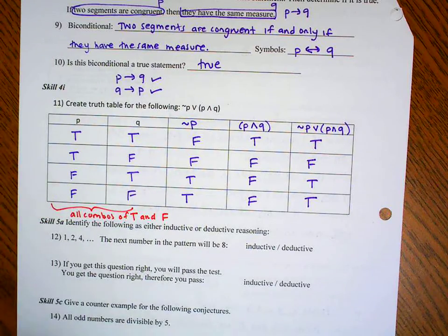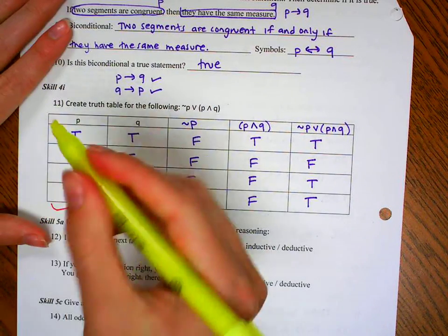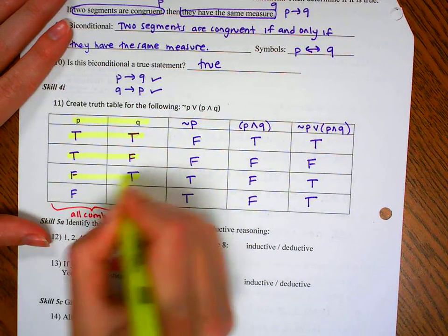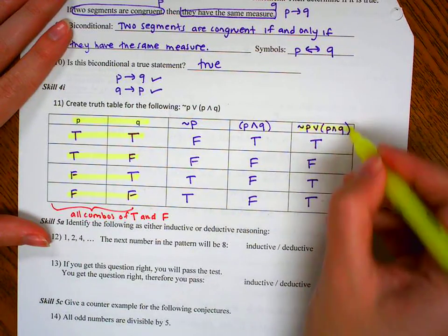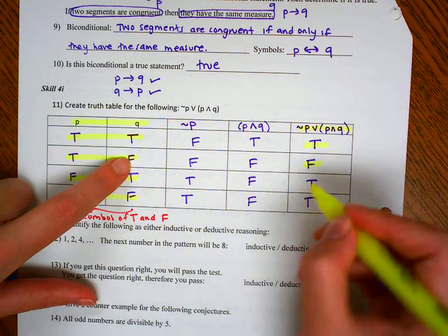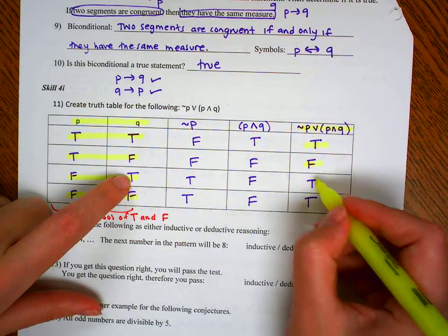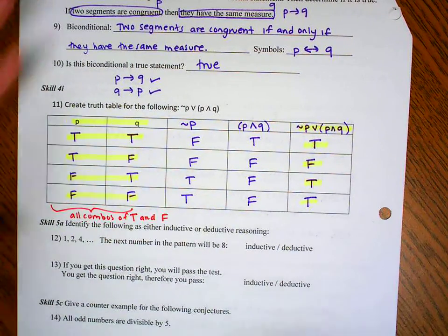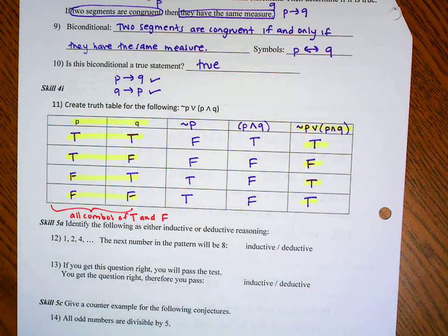So remember what a truth table does is it says, given these different combinations of P and Q, what are my outcomes? If I put in true and true, my outcome's true. If I put in true and false, my outcome is false. If I put in false and true, my outcome is true. If I put in false and false, my outcome is still somehow true. That's what truth table does. It shows you the outcomes.